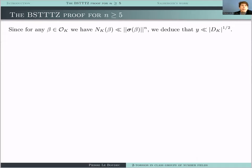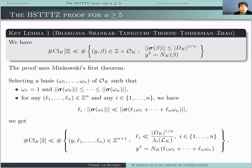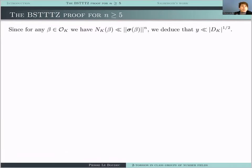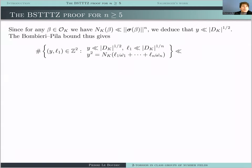For any beta in O_K, the norm N_{K/Q}(beta) is the product of all embeddings, which is bounded by the Euclidean norm of sigma(beta) to the N by the AM-GM inequality. So we get the bound for Y: since Y^2 = N_{K/Q}(beta) is at most sigma(beta)^N which is at most D_K, we get Y is at most the square root of D_K. Then they use the Bombieri–Pila bound for the counting function, counting the number of (Y, l_1) such that Y^2 equals the norm of l_1*omega_1 + ... + l_N*omega_N with Y and l_1 in some box.